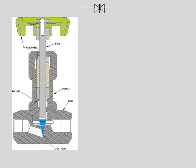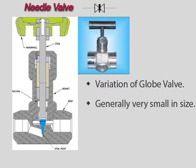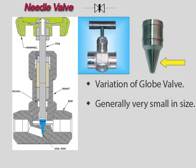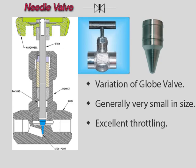A needle valve is a variation of the globe valve design used to make relatively fine adjustments in the amount of fluid flow. The distinguishing characteristic of a needle valve is the long, tapered, needle-like point on the end of the valve stem — the needle acts like a disc. The advantage of a needle valve is the excellent throttling characteristic and fine flow adjustments that can be made. The disadvantage is the extremely large amount of head loss that occurs across the valve.